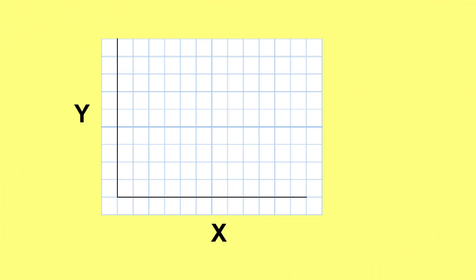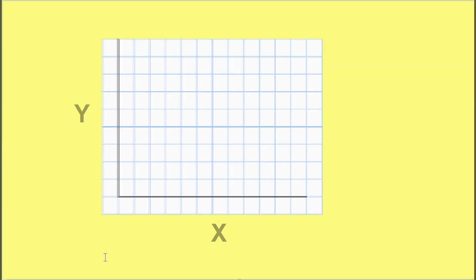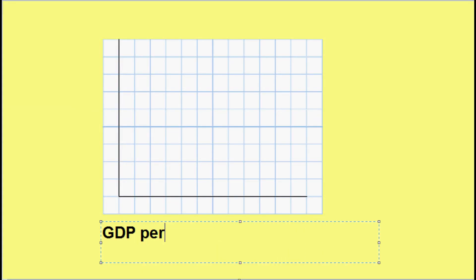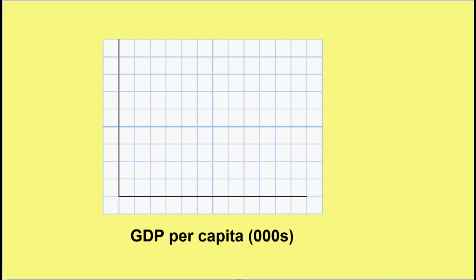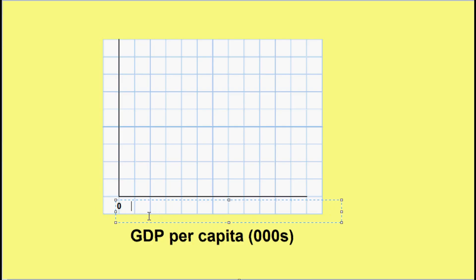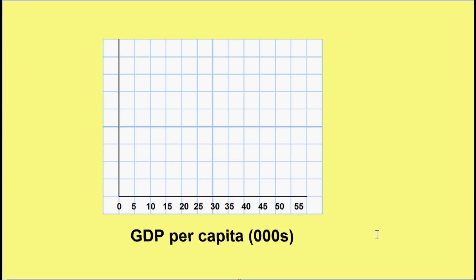First, on your graph paper draw your horizontal x-axis and your vertical y-axis. On your x-axis place your independent variable — that is the variable that is more likely to be the cause of the relationship. Make sure you scale in even multiples of 5s, 10s, or 20s so you have a consistent scale. I think GDP per capita is more likely to influence life expectancy than the other way around, so I will make this my independent variable.